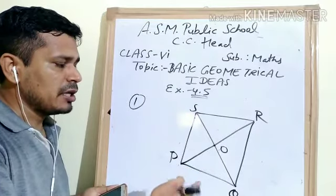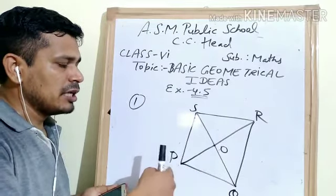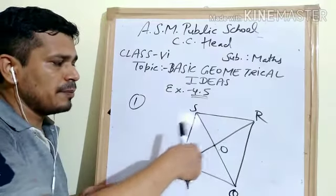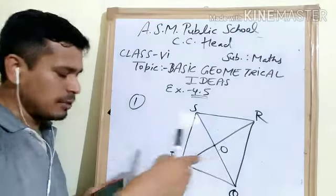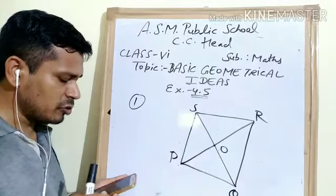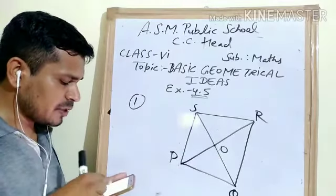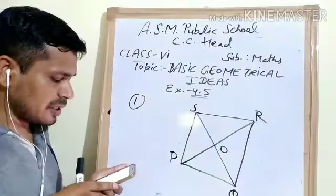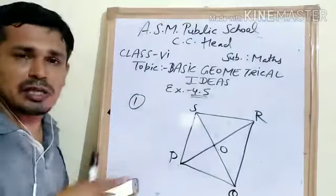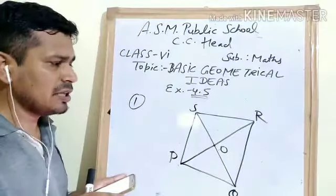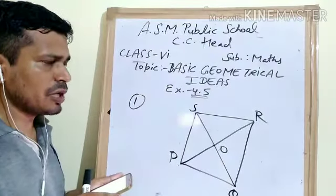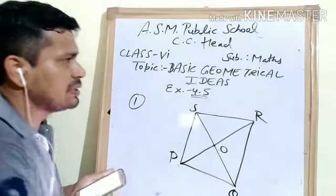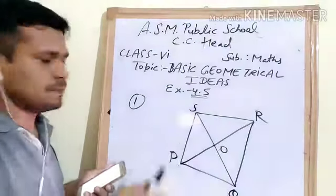So you can see — where are the diagonals meeting? The diagonals are meeting inside. This was your first question. Is it hard? I think, I hope you can understand it. So let's take the second problem.